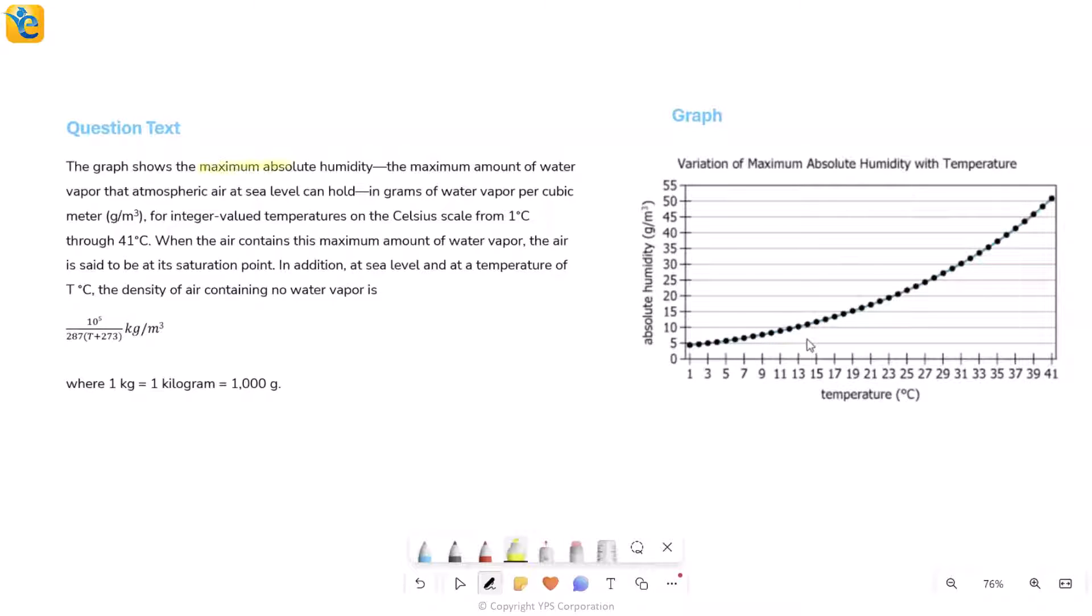This question talks about maximum absolute humidity and then defines this term. It is the maximum amount of water vapor that atmospheric air at sea level can hold in grams per meter cube. That's the unit, which simply means if I have one meter cube of air, how many grams of water vapor can this air hold at the maximum level?